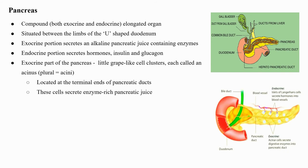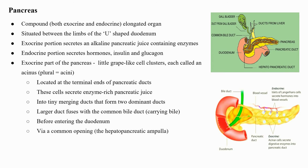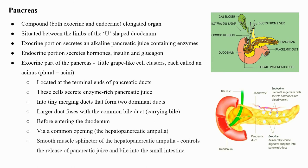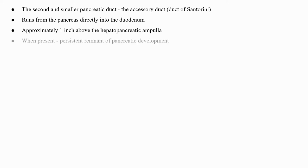These acinar cells secrete enzyme-rich pancreatic juice into tiny merging ducts that form two dominant ducts. The larger duct fuses with the common bile duct carrying bile from the liver and gallbladder, just before entering the duodenum via a common opening — the hepatopancreatic ampulla. The smooth muscle sphincter of the hepatopancreatic ampulla controls the release of pancreatic juice and bile into the small intestine. The second and smaller pancreatic duct, the accessory duct (also called the duct of Santorini), runs from the pancreas directly into the duodenum approximately one inch above the hepatopancreatic ampulla.